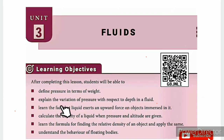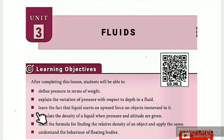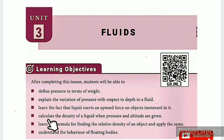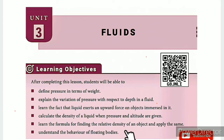In this lesson, the learning objectives are: define pressure in terms of weight; explain the variation of pressure with respect to depth in a fluid; learn the fact that liquid exerts an upward force on objects immersed in it; calculate the density of a liquid when pressure and altitude are given; learn the formula for finding the relative density of an object and apply the same; understand the behavior of floating bodies.